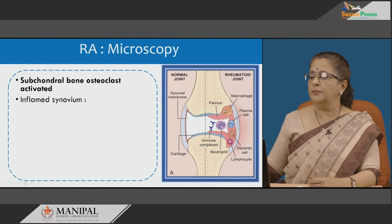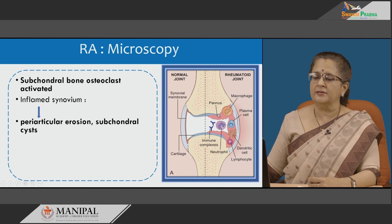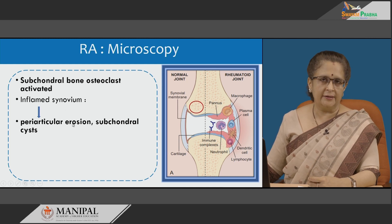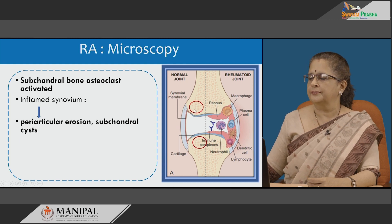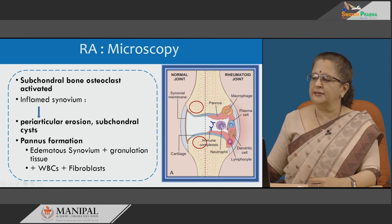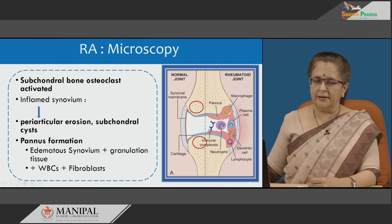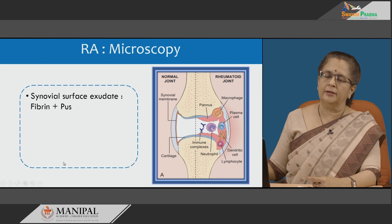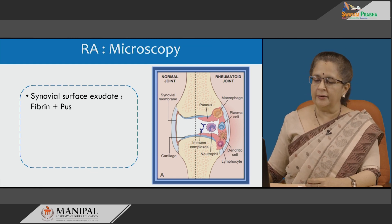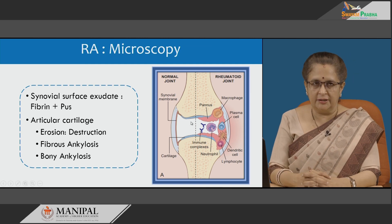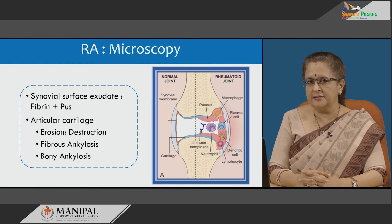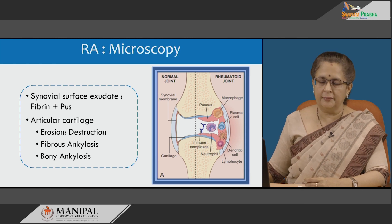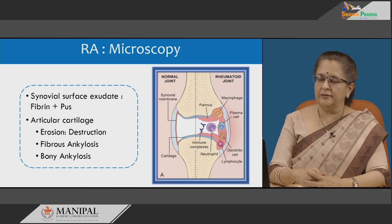Further changes include subchondral bone osteoclast activation giving rise to subchondral cysts. Inflamed synovium causes periarticular erosion. Pannus formation represents edematous synovium with granulation tissue, WBCs and activated fibroblasts. The synovial surface is also covered by an exudate including fibrin and neutrophils. Articular cartilage undergoes destruction, later replaced by fibrous ankylosis and subsequently bony ankylosis, resulting in fusion of the joint and restricted mobility.